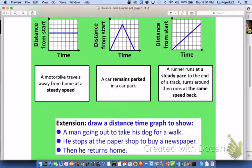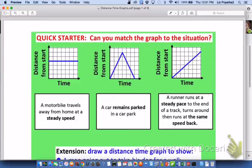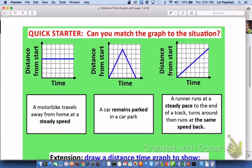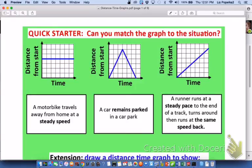Here are a couple of examples of problems similar to that where we've got the situation and the graphs to see whether or not we can match them up. So I am looking at the first situation right here. A motorbike travels away from home at a steady speed.